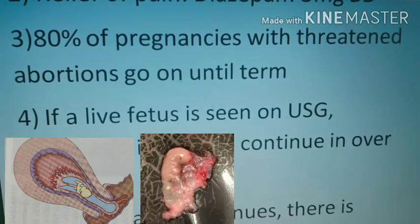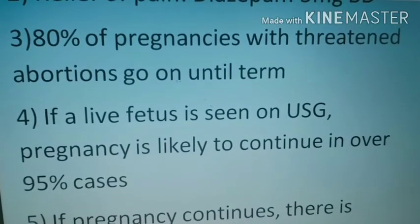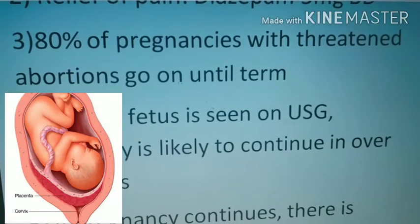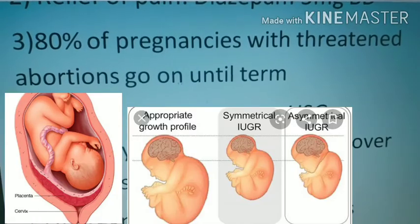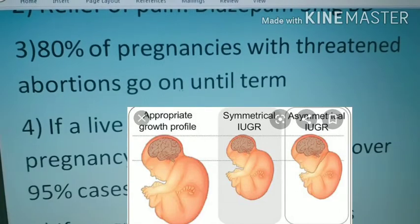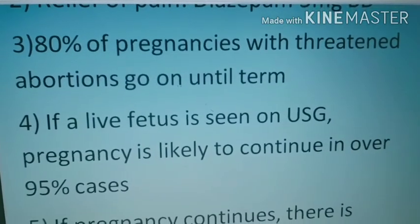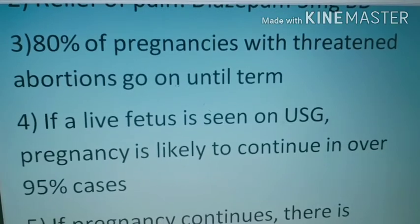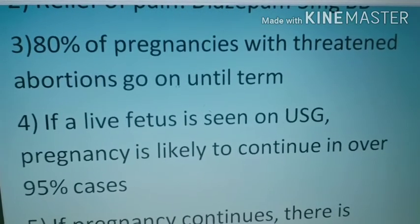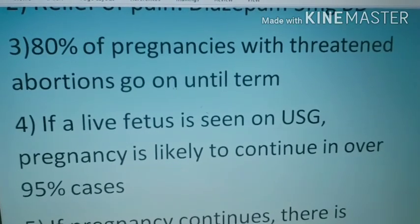Even if the pregnancy continues, there is an increased frequency of preterm labor, placenta previa, intrauterine growth restriction of the fetus, or fetal anomaly. If a live fetus is seen on ultrasound, the pregnancy is likely to continue in over 95% of cases.